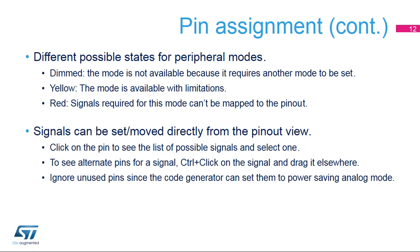There are different possible states for peripheral modes. Dimmed — the mode is not available because it requires another mode to be set; place the mouse pointer over the dimmed mode to see the reason. It may require a disabled clock source or have other peripheral dependencies. Yellow — the mode is available with limitations because some options are blocked by conflicts; for example, the USART may not be configured to synchronous mode because all selectable clock pins are taken. Red — signals required for this mode cannot be mapped to the pinout.